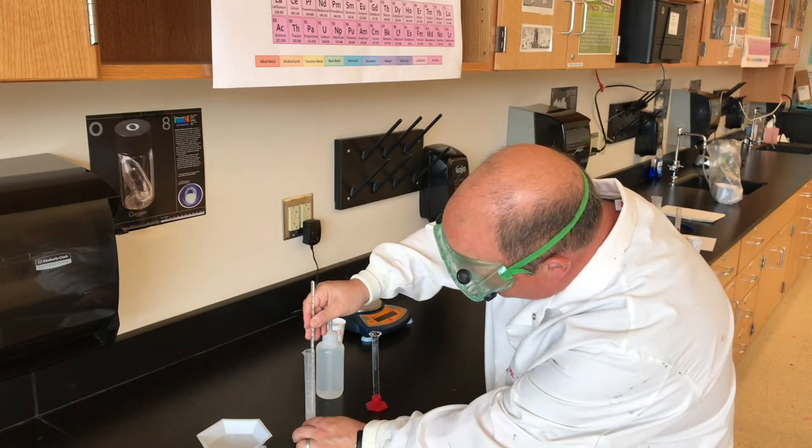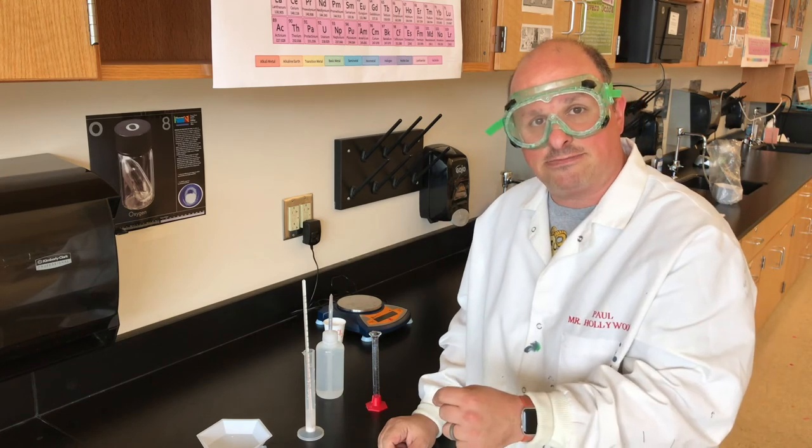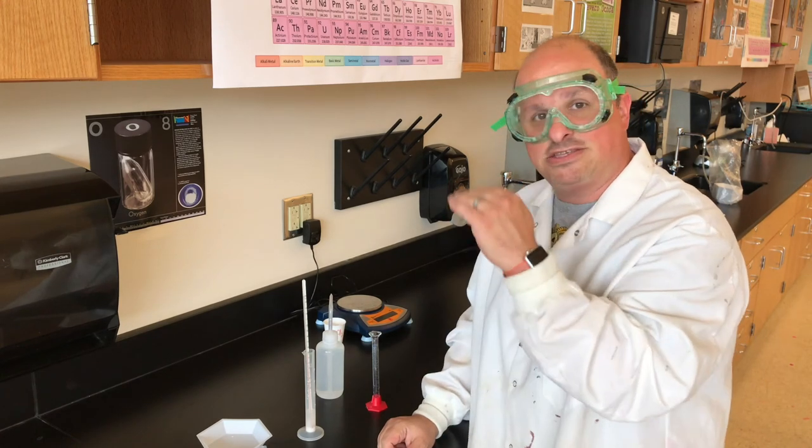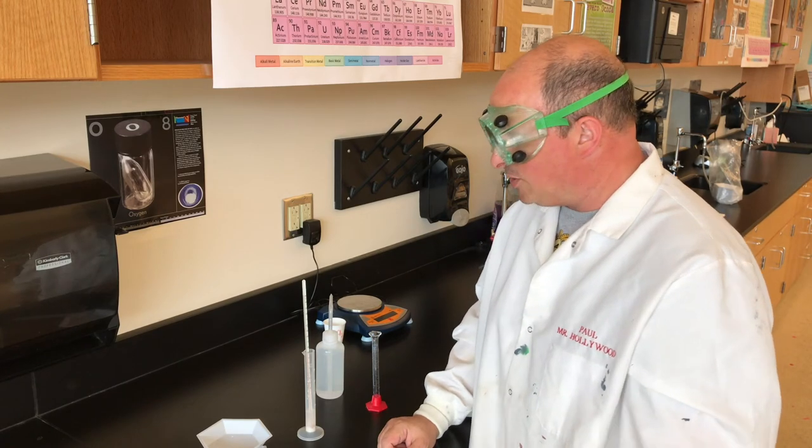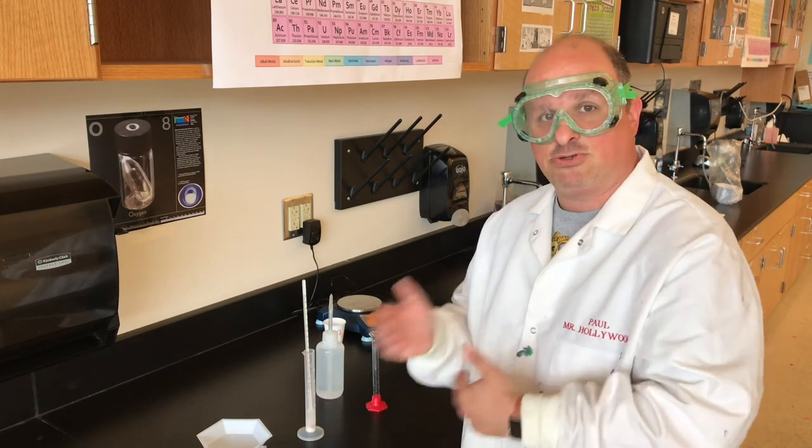Your job is to write down the temperature that it started at, and then the temperature that it gets to, the maximum temperature, the highest temperature. And then you're going to calculate delta T by subtracting those two.